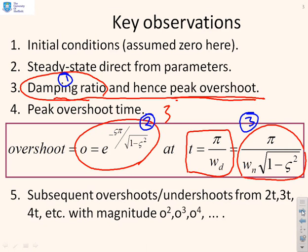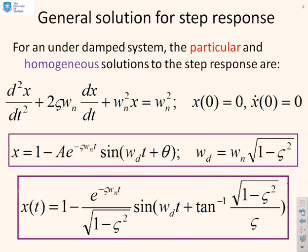As a note, subsequent overshoots or undershoots are given by times like 2t, 3t, 4t and so on, and have magnitude o², o³, o⁴. O was given here. These calculations should be enough for you to get a decent sketch.